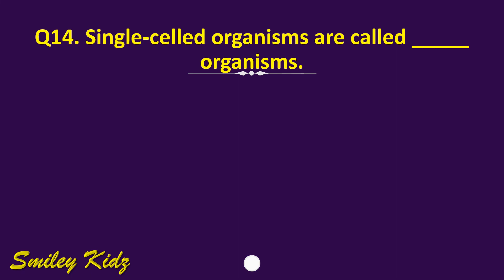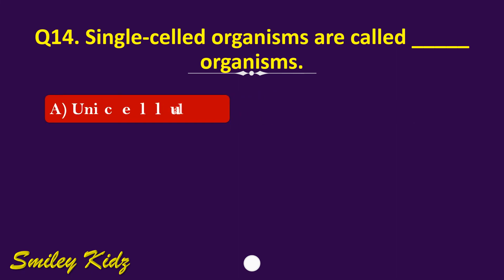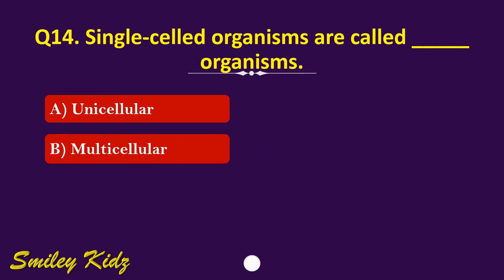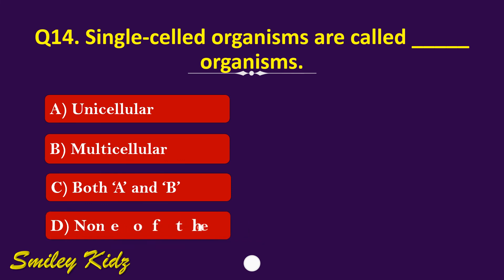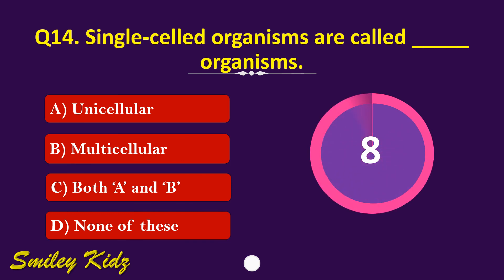Question number 14. Single cell organisms are called dash organisms. The options are: A. Unicellular, B. Multicellular, C. Both A and B, or D. None of these. Your time starts now. Your time is up and the right answer is option A. Unicellular. Single celled organisms are called unicellular organisms.